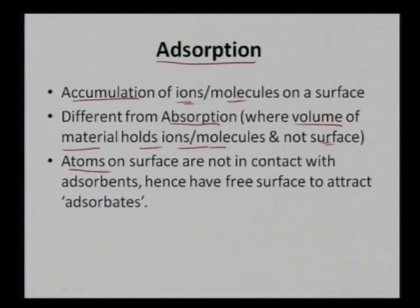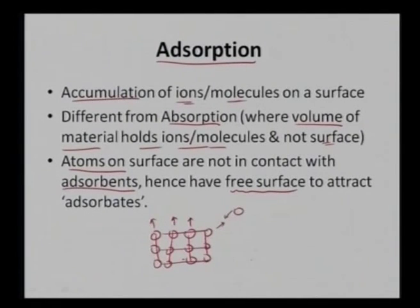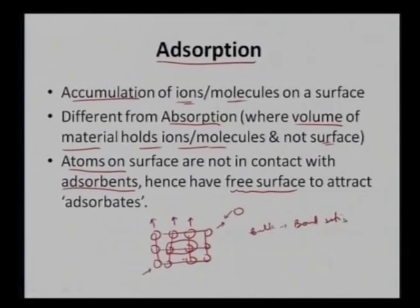In adsorption, atoms on the surface are not in contact with the adsorbent — we have a free surface. The atoms which are not in the bulk, meaning the atoms on the surface, have free bonds and hence can attract adsorbates to their sites. The bulk material has all bonds satisfied, whereas at the surface we have unsatisfied bonds. This makes the surface a high energy area, so secondary species tend to come and adsorb on the surface to reduce the overall surface energy.